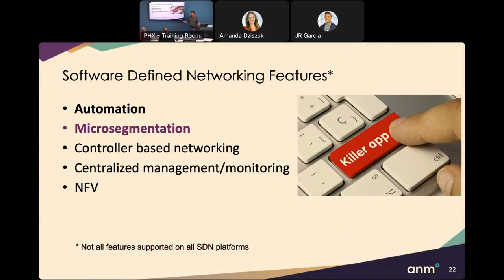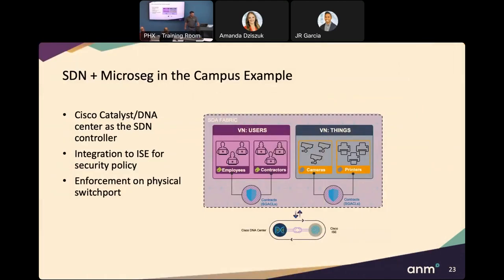There are lots of solutions and vendors, but there are core features to look for. Automation becomes key — like the wireless controller example: log into one controller, create a new SSID, and it's pushed to a thousand APs. That's the type of automation we want everywhere. You should also get the ability to do micro-segmentation. Centralized management and monitoring become critically important as well — you want to know what policies need to be applied and what traffic is happening so you can control it.